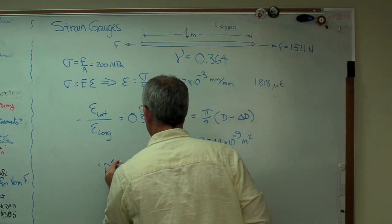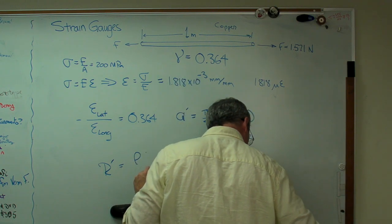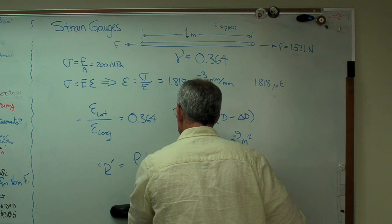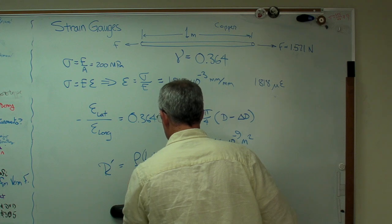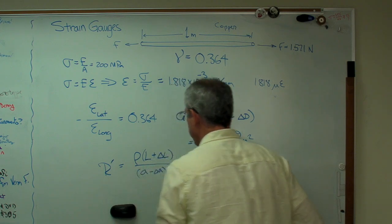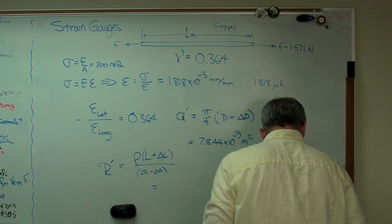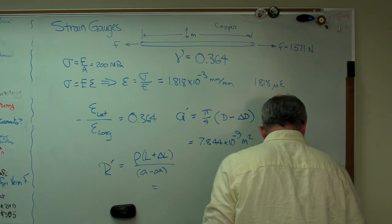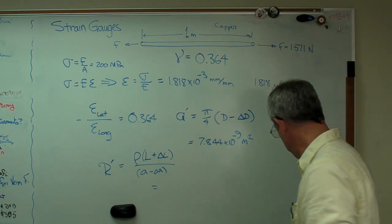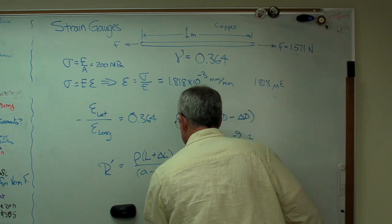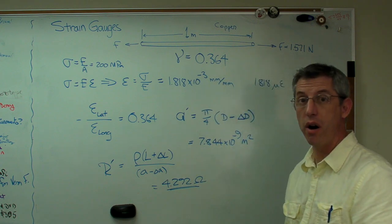And R prime, which is now the resistance I get, having applied this load and having the wire get longer, turns out to be ρ. Let's see. Was it ρ? I'm having a stupid attack here. L plus delta L. And that's, let's see, A minus delta A. I guess we'll call it like that. The area goes down. When I do that, I get a very slightly smaller number. Whereas I got, let's see, 4.278 before. This time, I'm going to get 4.292 ohms. The resistance has gone up just a little.